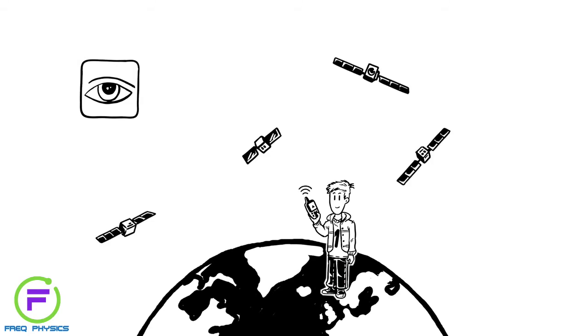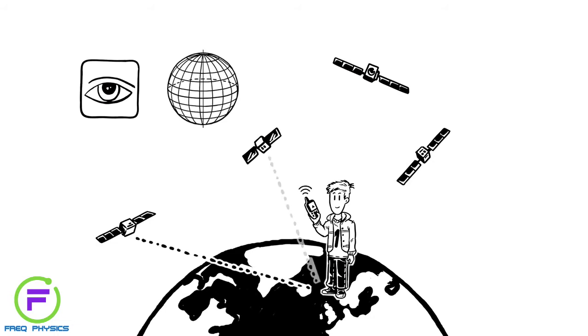A minimum of three locate your position using latitude and longitude. By measuring the distance and angle between three satellites and your smartphone, they can pinpoint you exactly. The fourth calculates your altitude.